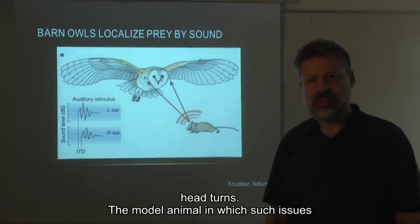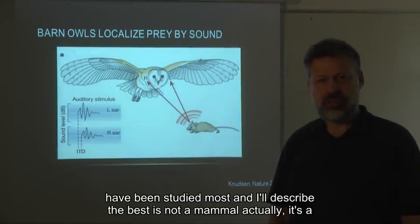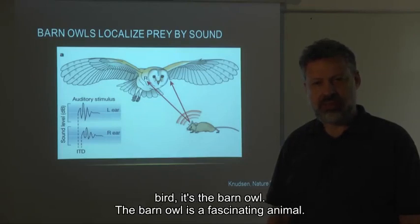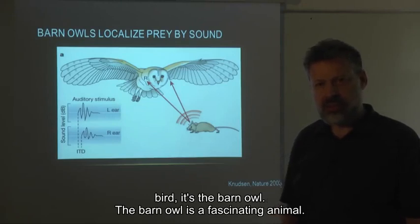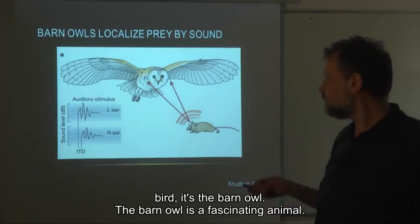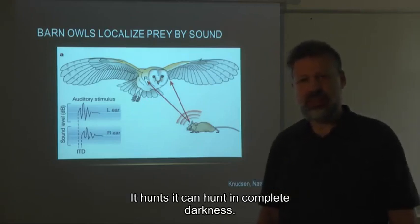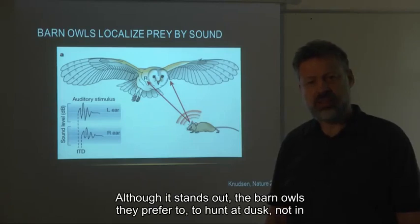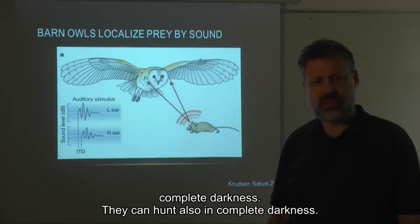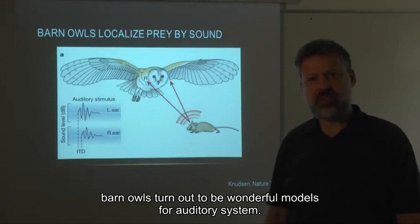The model animal in which such issues have been studied most and are described best is not a mammal — it's a bird. It's a barn owl. The barn owl is a fascinating animal. It hunts — it can hunt in complete darkness. Although barn owls prefer to hunt at dusk, not in complete darkness, they can also hunt in complete darkness.